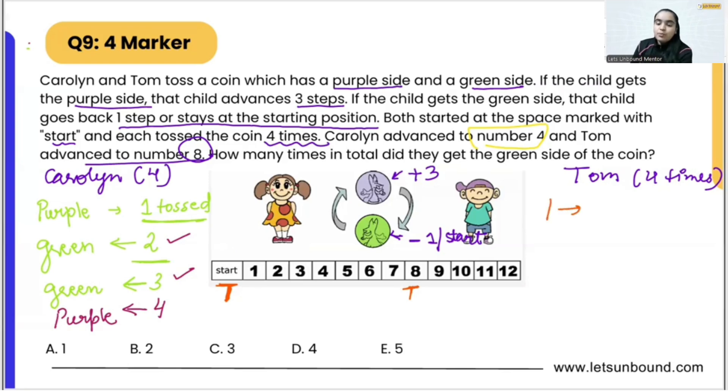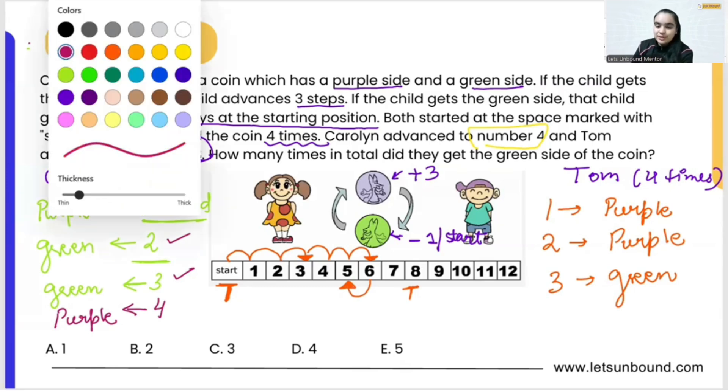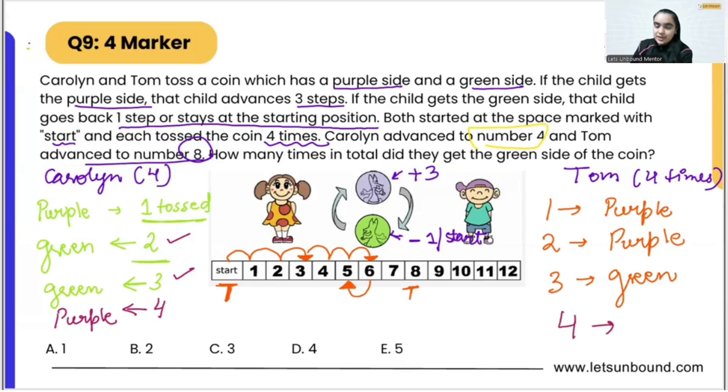As the first time, Tom got purple so that means he will make a jump of three steps. Again as the second time he got purple, so three steps forward again. As the third time he got green, so one step back. And as the fourth time he will get purple again that will advance him to eight, that is three steps forward.